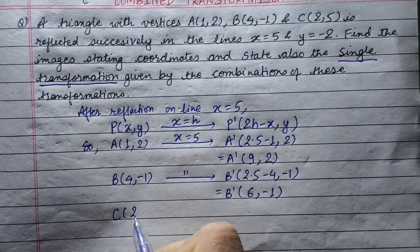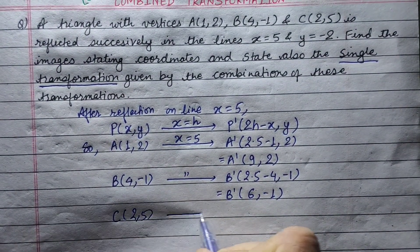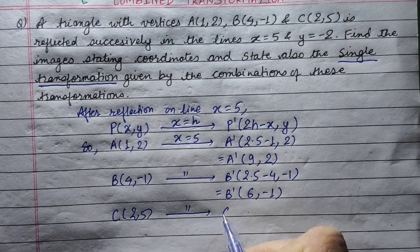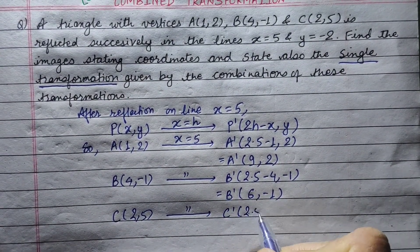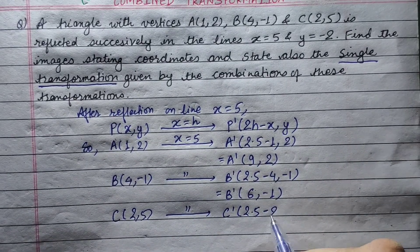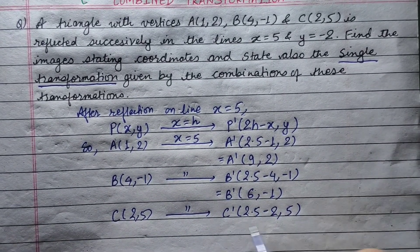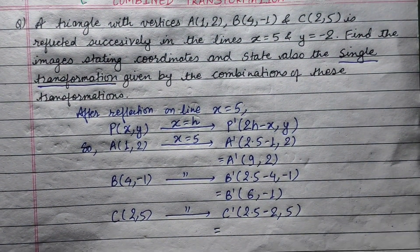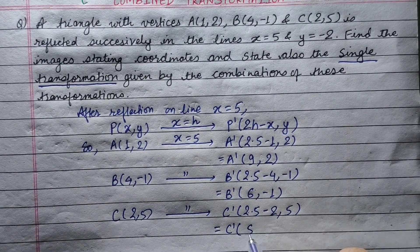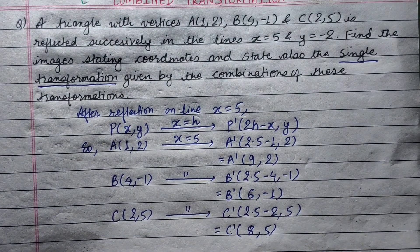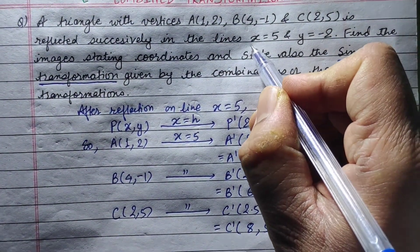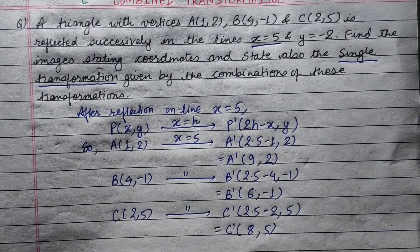For vertex C(2,5): applying reflection in x equals h, we get C dash as 2 into 5 minus 2, which gives 10 minus 2 = 8. So C dash is (8, 5). This completes the reflection of all vertices in the line x equals 5.